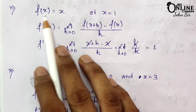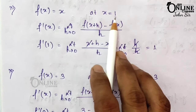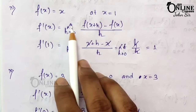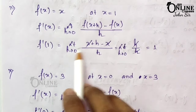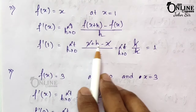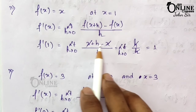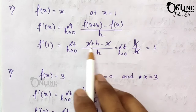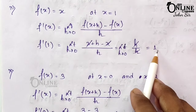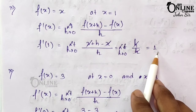Third: f(x) = x at x = 1. By the same formula, limit h→0 of [(x+h) - x] / h = h/h = 1. So f'(1) = 1.